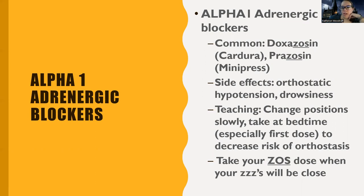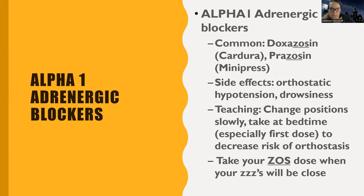Next are alpha-1 adrenergic blockers — all the 'zosin' and 'zos' endings. Diuretics lower blood pressure by reducing fluid and sodium. Adrenergic blockers — alpha and beta — help by reducing vasoconstriction and stopping the sympathetic nervous system from being over-activated. Alpha blockers work mostly at the vessel level, helping to relax smooth muscle in blood vessels, causing less constriction, less resistance, and therefore less pressure.